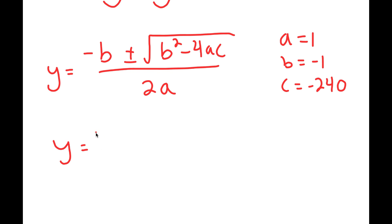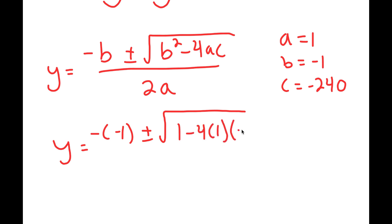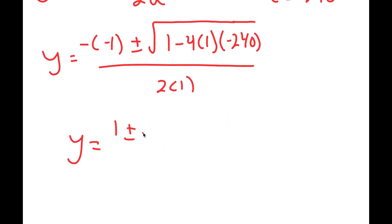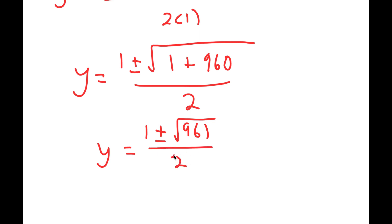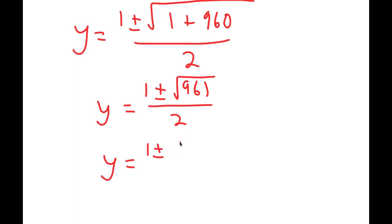So I get y is equal to negative of negative 1 plus or minus the square root of negative 1 squared, which is 1, minus 4 times a times c, which is negative 240, all over 2 times 1. And this is equal to 1 plus or minus the square root of 1 plus 960 over 2, which is equal to 1 plus or minus the square root of 961 over 2. Now the square root of 961 is equal to 31, so I get y equals 1 plus or minus 31 over 2.